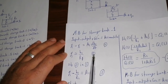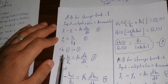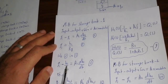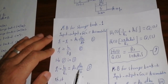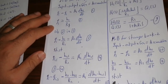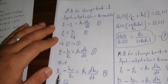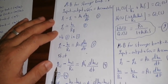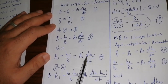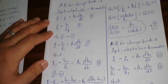Substituting Q1 = H1/R1 into the material balance equation gives: QI - H1/R1 = A1·dH1/dt (Equation 3). For any process there is an initial steady-state condition, so we also write the steady-state form: QI_S - H1S/R1 = A1·dH1S/dt, where S denotes the steady-state initial condition (Equation 4).